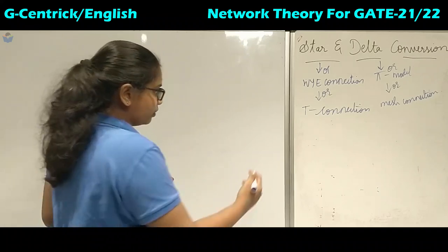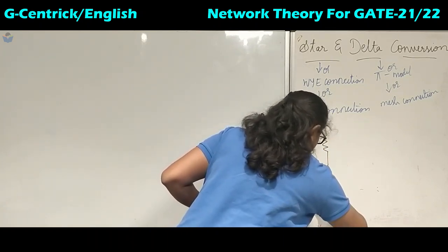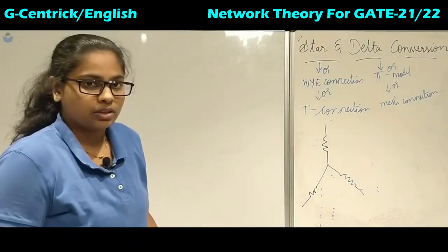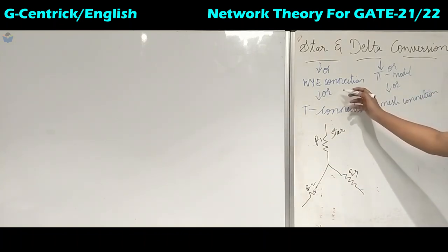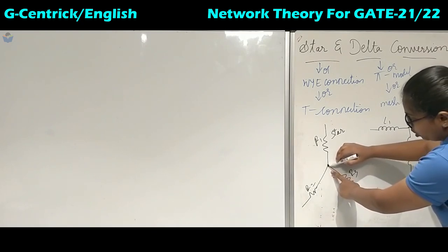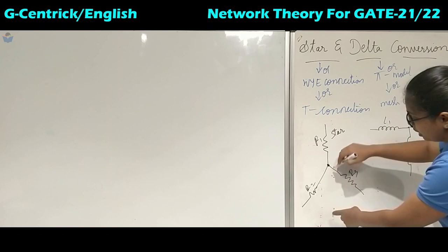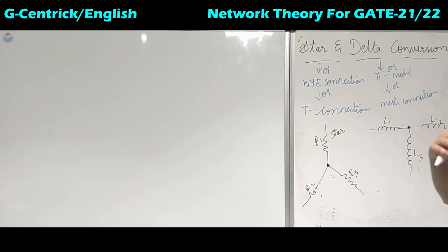Coming to the symbolic representation of star, we can represent it in this way. The elements can either be resistors, inductors, or capacitors. This we will call the star connection with R1, R2, and R3. In the T connection, we can use inductors L1, L2, L3. All the ends of the elements are connected to a common node, and the other ends are left open to connect to other elements.